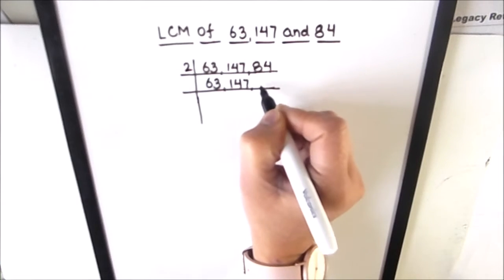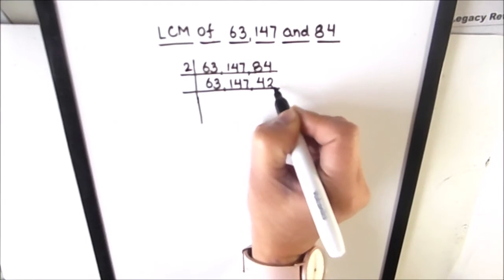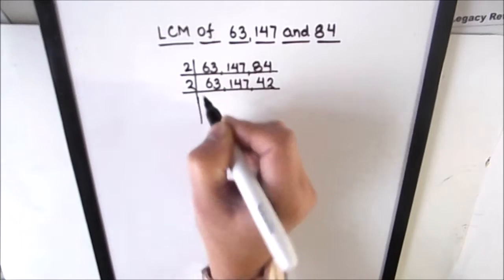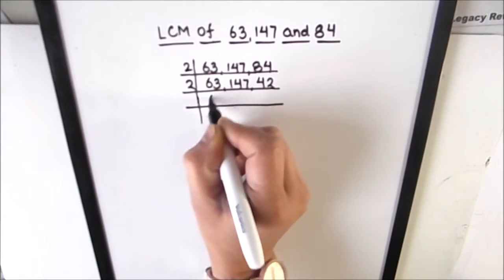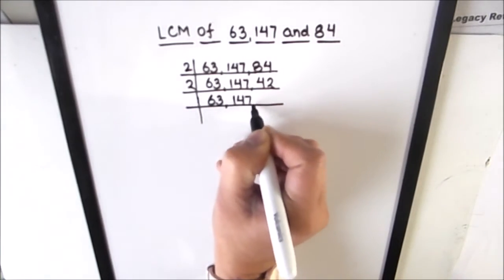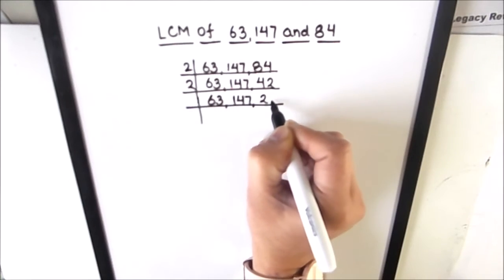We'll divide 84: 2 times 4 is 8, 2 times 2 is 4. Again we are going to use 2 to divide 42. 63 will be as is and 147 will be as is. 2 times 2 is 4, 2 times 1 is 2.